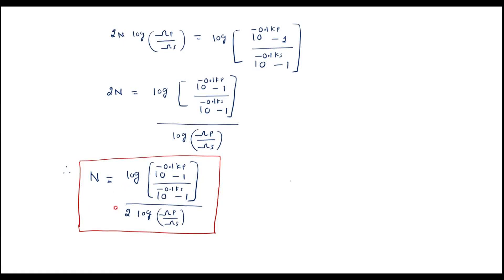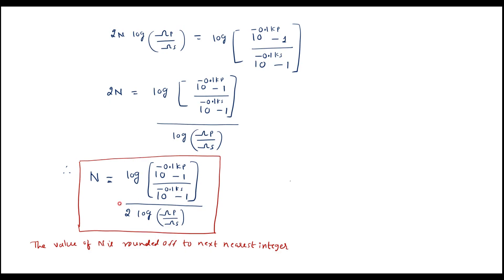The value of n is rounded off to the next nearest integer. For example, if we get n = 2.3, we take n = 3. Likewise, if we get n = 3.8, we round it off to the next nearest integer, that is n = 4.